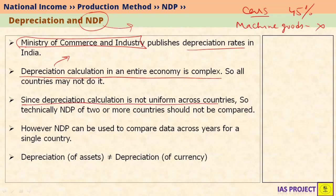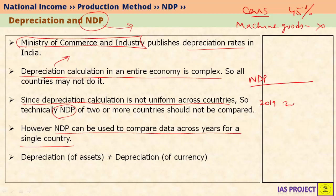Since depreciation calculation is not uniform across countries, technically comparing the NDP of two or more countries is not very logical. However, NDP can be used to compare data across different years for a single country. For example, for India, you may plot NDP across various years — 2019, 2020, 2021, 2022, 2023 — to get information about India's economic development. But you cannot compare NDP of India and Sri Lanka because their depreciation rates may differ.